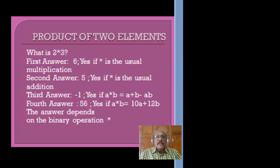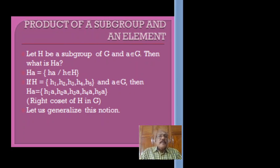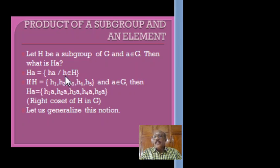Now let us generalize this concept. Instead of considering two elements, we consider a subgroup H of the group G and an element A in G. To define the product H·A — the product of a subgroup and an element — motivated by the definition of a·b, we define HA as the set of all products h·A where h belongs to H. That means we multiply each element of H by A on the right hand side.